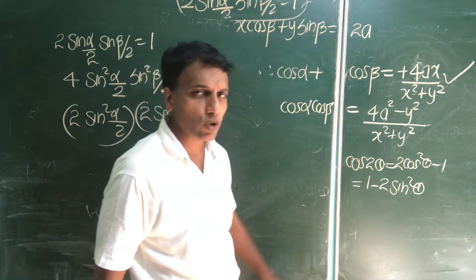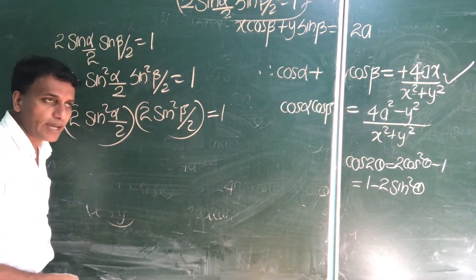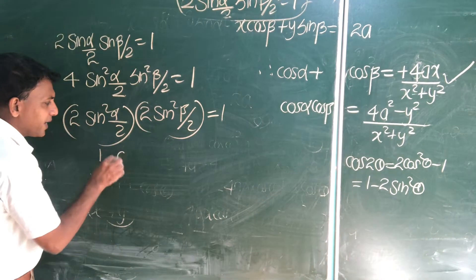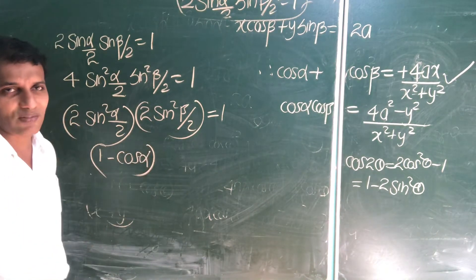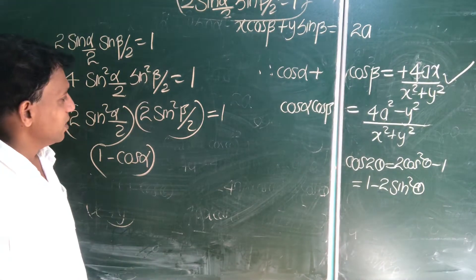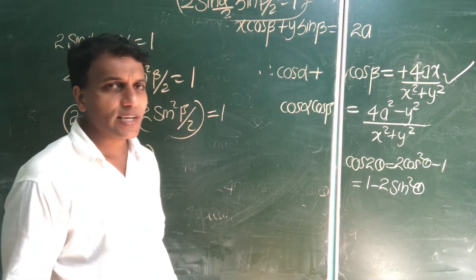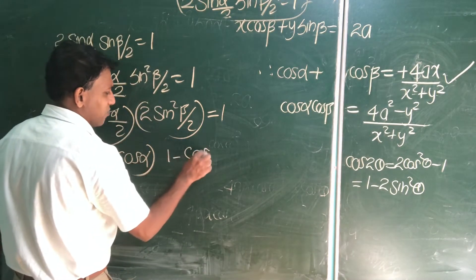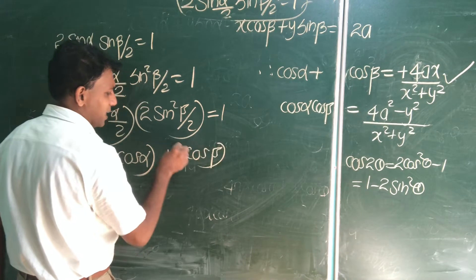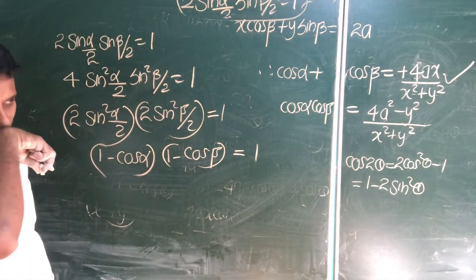1 minus cos 2 theta, right? So, what is 2 sin square alpha by 2? 1 minus cos alpha. Are you there? 1 minus cos alpha. What is 2 sin square beta by 2? 1 minus cos beta. 1 minus cos beta equal to 1. Interesting problem.